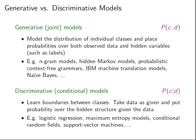The second variant is conditional or discriminative models, where we just want to learn the probability of C given D. The difference is we assume the document is there and don't put a probability on its existence. What we learn here are boundaries between classes — we take the data as given and only put a probability on the hidden structure given that data. Models for this include logistic regression, maximum entropy models, CRFs, and support vector machines.